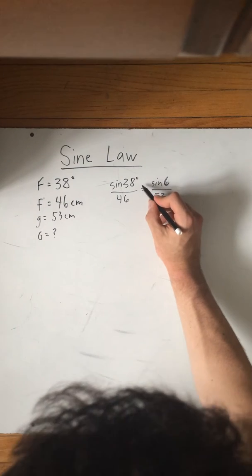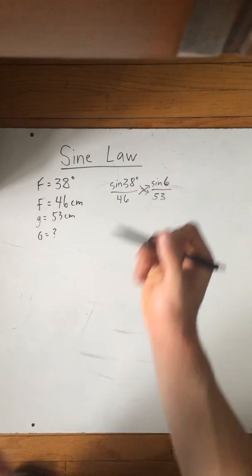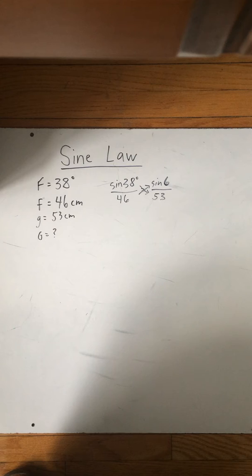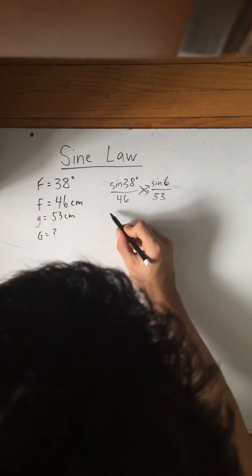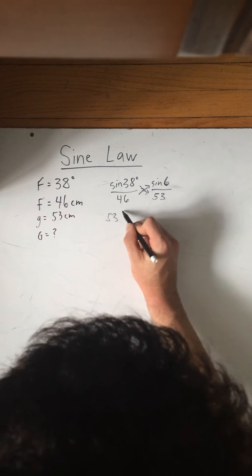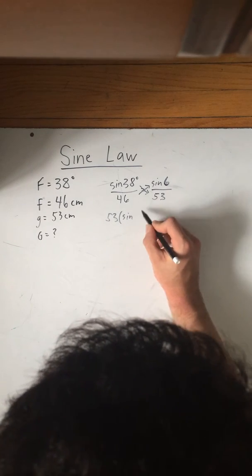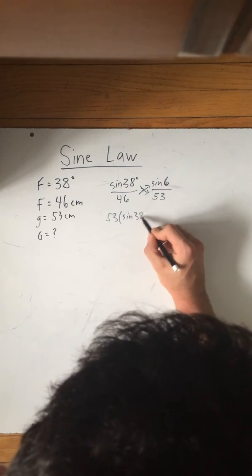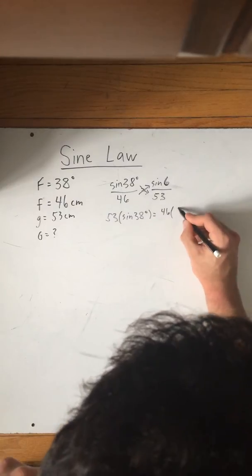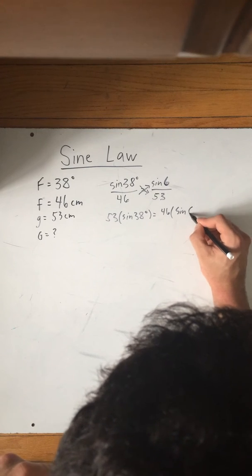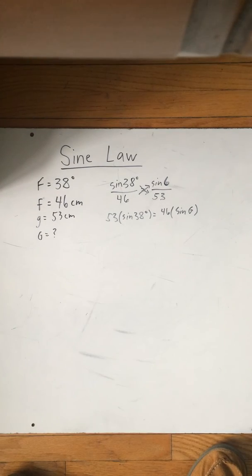So we move that across there and that across there. So then that becomes 53 times sine 38 degrees equals 46 multiplied by sine G.